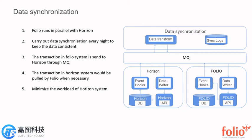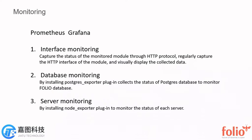This is to minimize the workload for the Horizon system. Fifth, monitoring. We use Prometheus and Grafana for monitoring. For interface monitoring, we capture the state of the monitored API through HTTP, and display the collected data. For database monitoring, we use the Postgres Exporter plugin to collect the states of the Postgres database to monitor the FOLIO databases. For server monitoring, we use the Node Exporter plugin to monitor the state of each server in the system.